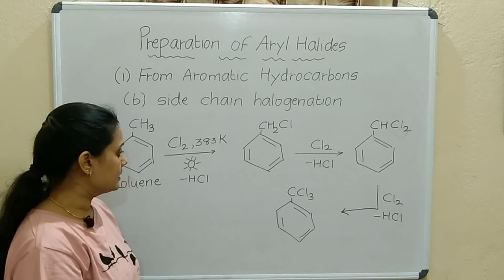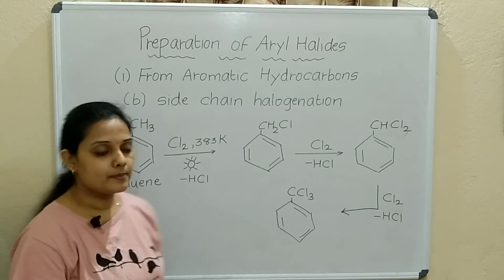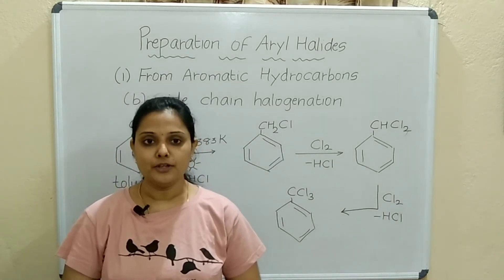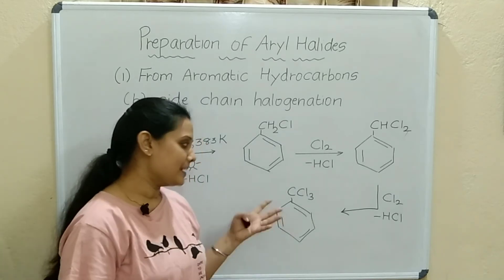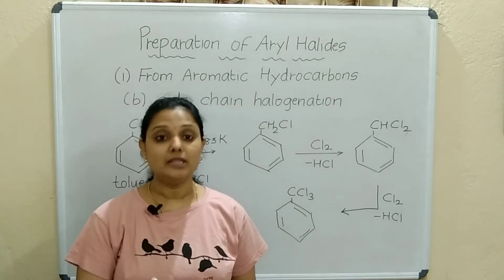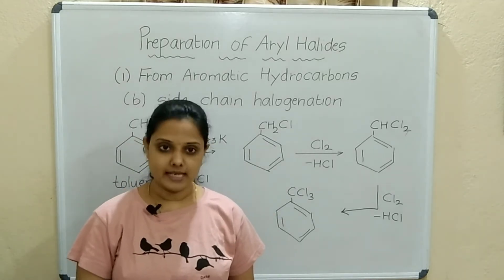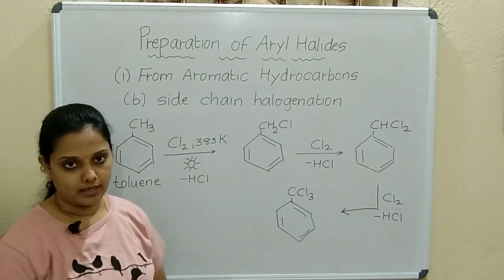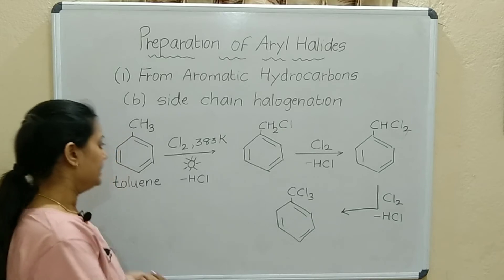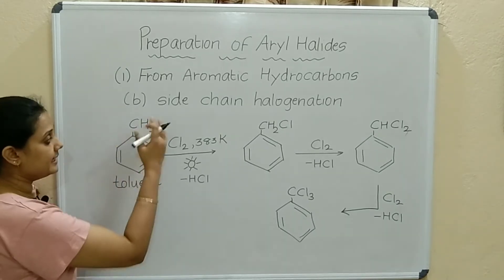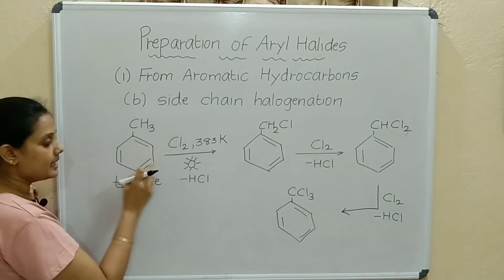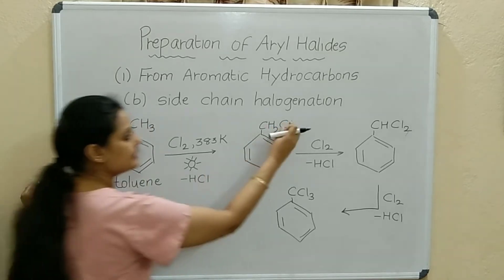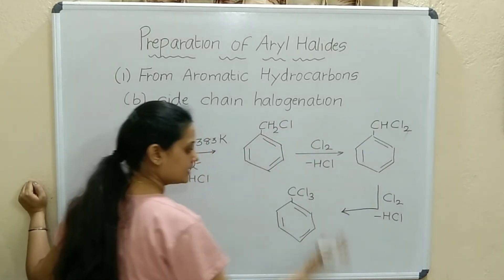This is a substitution reaction, similar to what you studied with methane CH4 in 10th standard, but here done with toluene as the aromatic hydrocarbon. In side chain halogenation, the halogen is not attached directly to the ring — it is in the side chain.